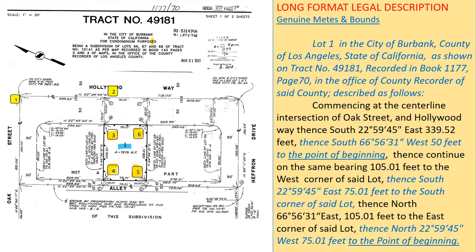Now, the genuine metes and bounds long format legal description. I have marked one to six on the tract map — follow the sequence and take your time to go through it. The finished legal description is on the right. Note that in a long format description, the caption covers a larger area than the body. In this example, the caption is the same size as the body.